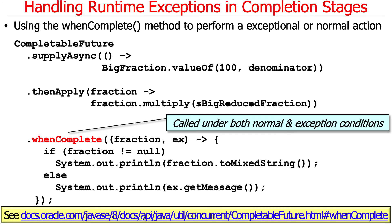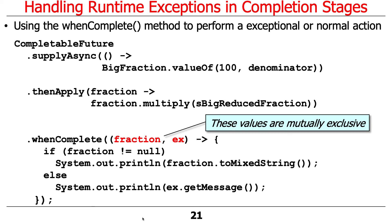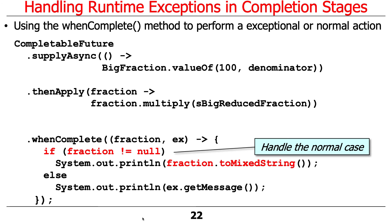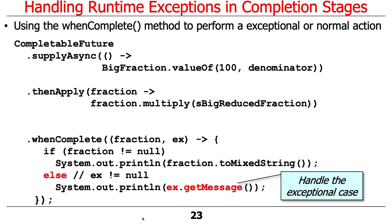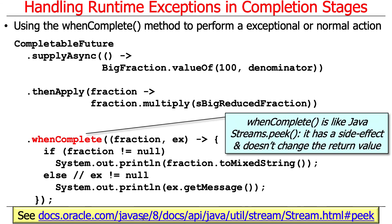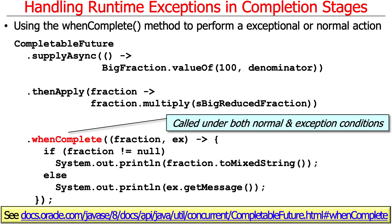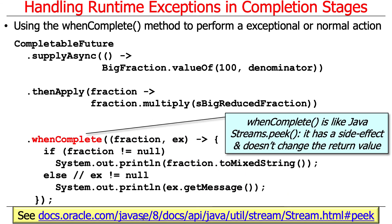A third way is to use the whenComplete method. Like handle, it's called under both normal and exceptional conditions — it always gets called. It takes two mutually exclusive parameters, just like handle. If fraction is not null, we print out the normal case; if fraction is null, we print out an exception message. However, whenComplete doesn't have the ability to change the return value, so instead it must have a side effect — in this case, printing the results. It's somewhat like the Java Stream peek method, which doesn't change the output but gives you a chance to do something with a side effect like logging values.